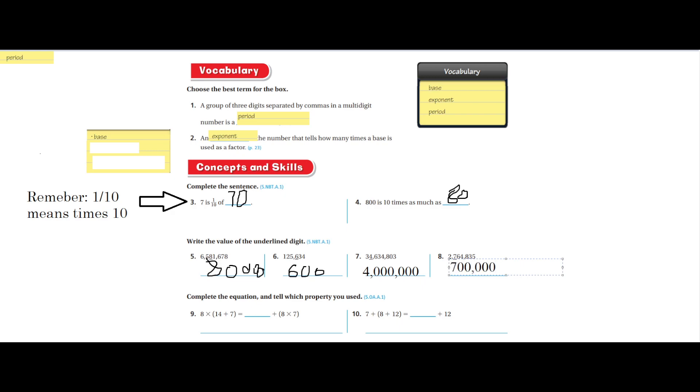Now complete the equation and tell which property you used. I wrote distributive property of multiplication, and you'll see why. Eight times fourteen plus seven equals eight times fourteen plus eight times seven. So eight times fourteen - let me get my brush.